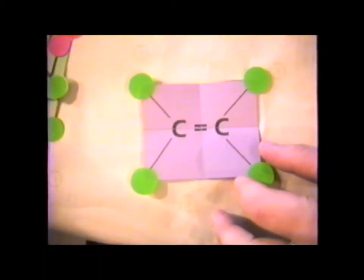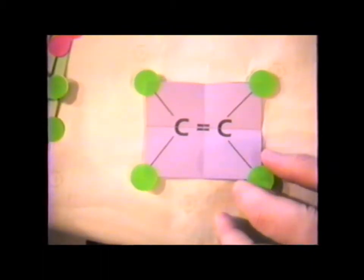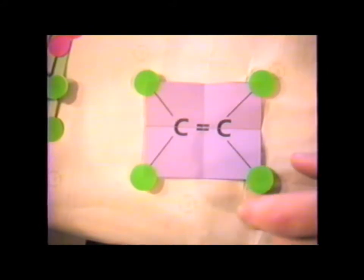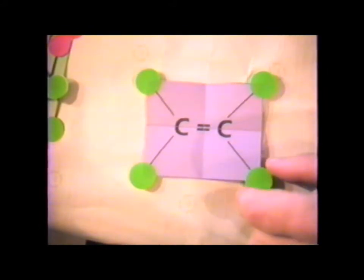Hello. Today, in episode four, we are going to look at the group of the rectangle. There are not many molecules that are specifically rectangular shaped, but a very important class of molecules that are rectangular shaped are the substituted ethylenes.